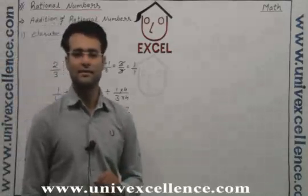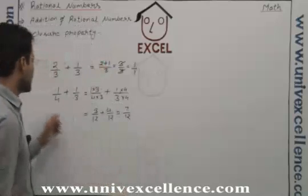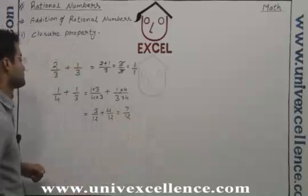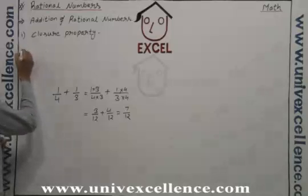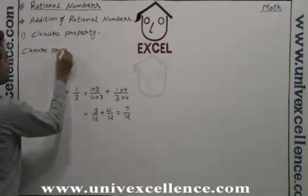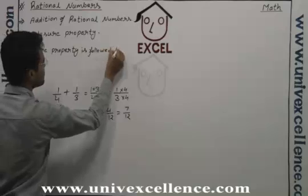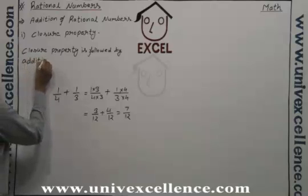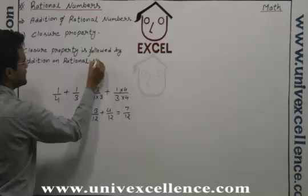We can see that the addition of two rational numbers gives a rational number again. So we can say that rational numbers follow the closure property under addition.